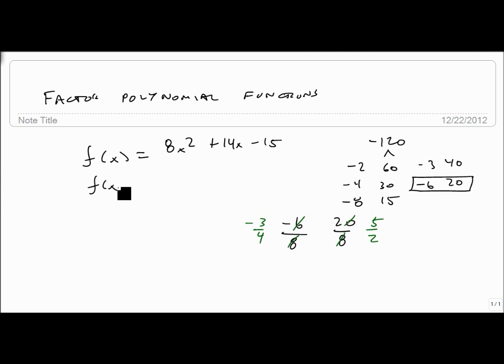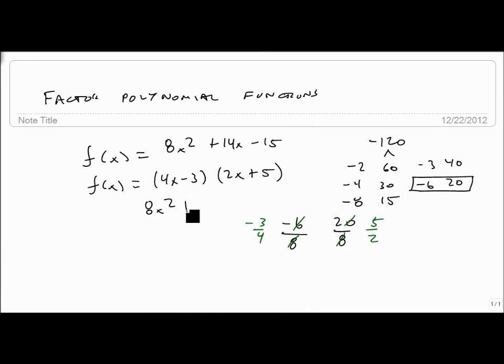So our polynomial answer, f(x), equals 4x minus 3 times 2x plus 5. We check our answer: 4x times 2x is 8x squared, plus 20x minus 6x minus 15. And sure enough, that reduces down, so we have our answer.